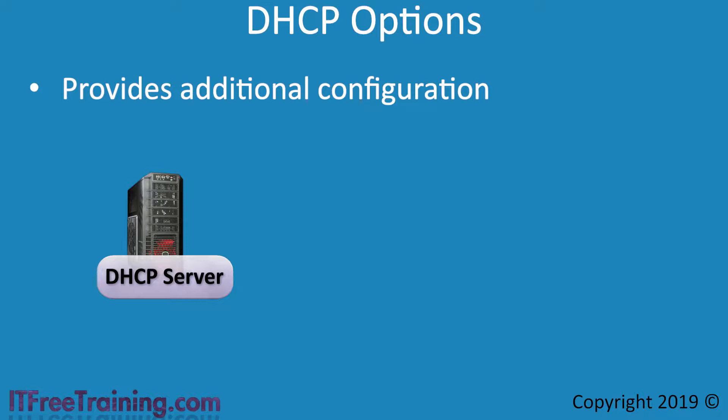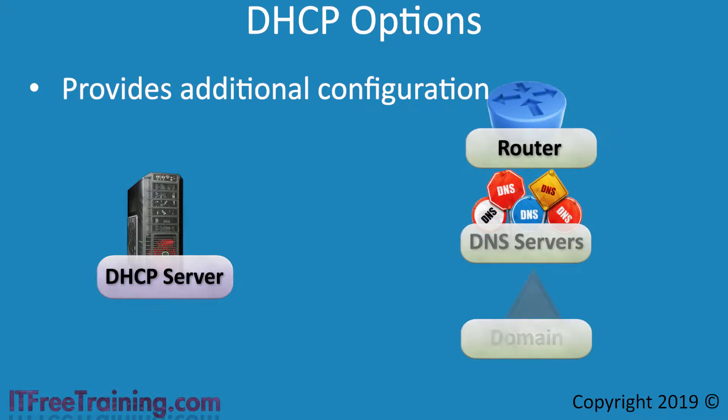Common options that may be configured with a DHCP server include router, DNS servers and domain. There is a lot more that can be configured and the administrator can also define custom options if required. The administrator also has some options about how the options are configured and thus which devices will receive which options, all of which I will look at next.